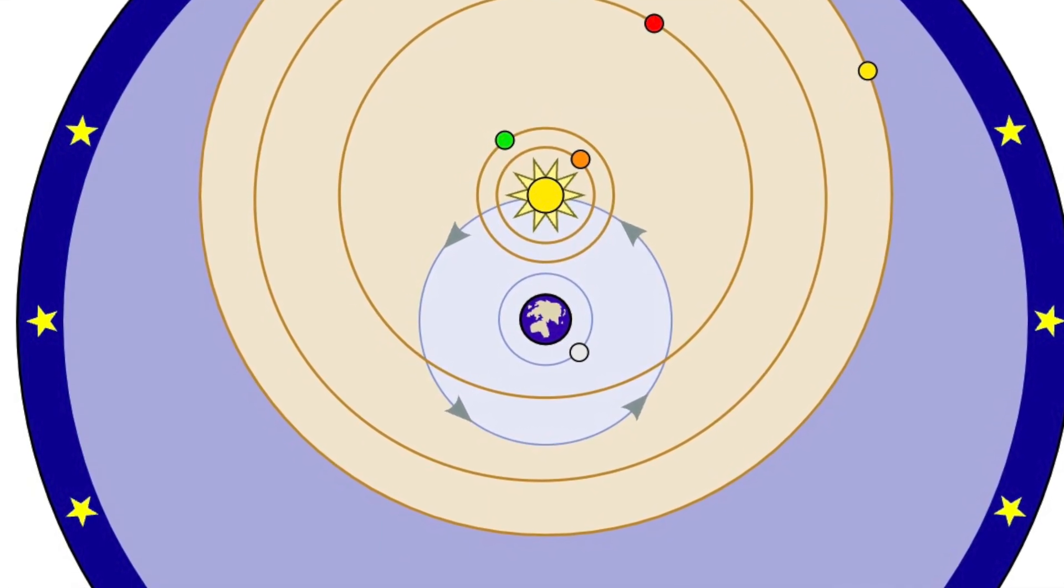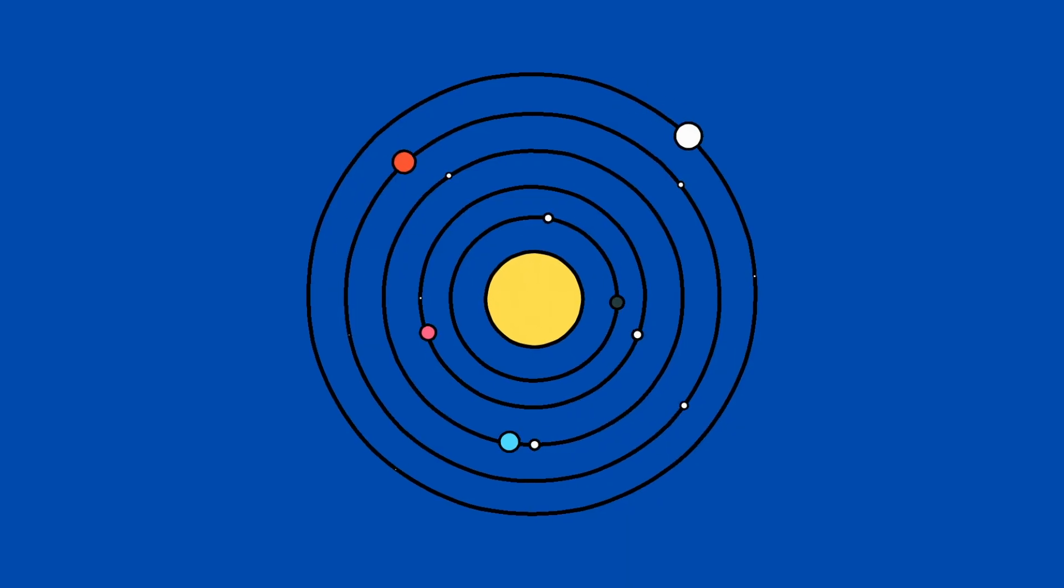But in the early 1500s, Copernicus said that this wasn't the case. He used observations and mathematics to propose a very different idea of the universe. His theory was called the heliocentric theory, and this is where the Earth and other planets travel in orbits around the sun.